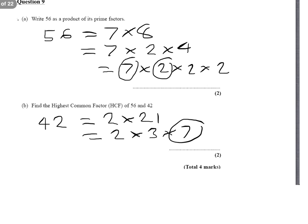You'll see that 7 and 2 are in both lists, and if we multiply 2 times 7, we get the highest common factor of 14.